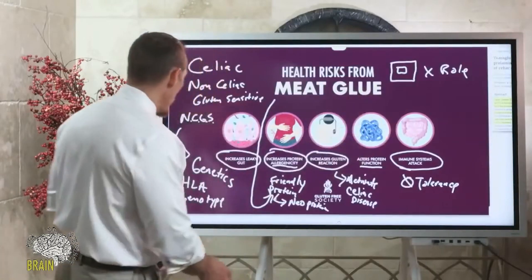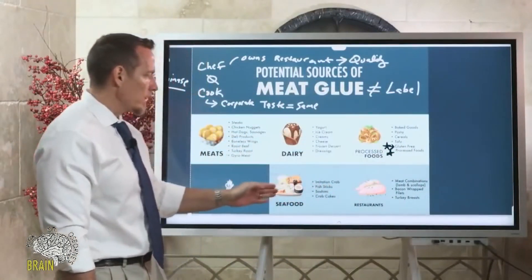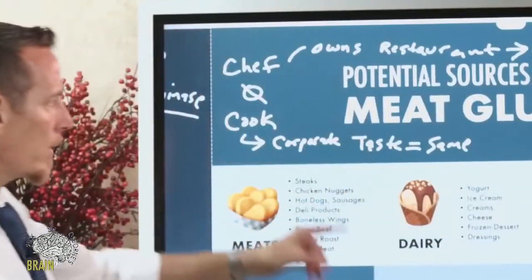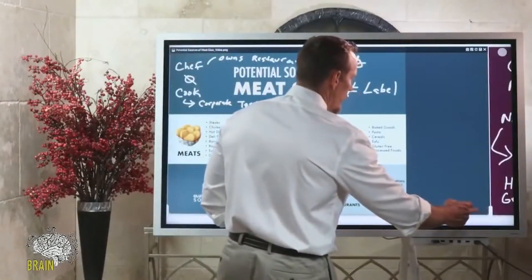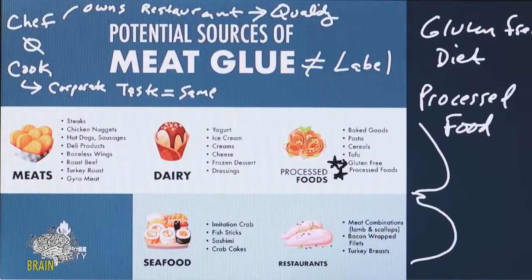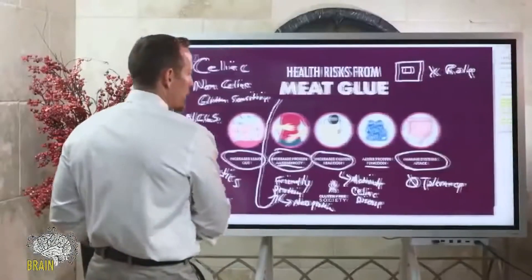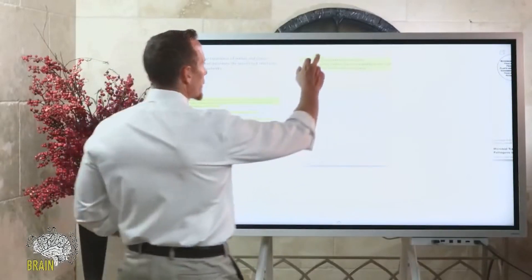These are ways that meat glue can actually impact your health. If you're eating these foods on a consistent, daily basis, you're running a great risk of not recovering — especially if you're a gluten-sensitive individual trying to overcome years of gluten-induced damage. A lot of people go gluten-free but their diet is full of processed food. They go to the gluten-free aisle in the grocery store, which is predominantly this junk — with meat glue, other food additives, dyes, preservatives, and so on — and they don't end up having any great degree of recovery.